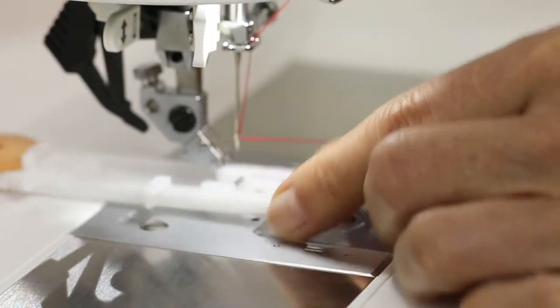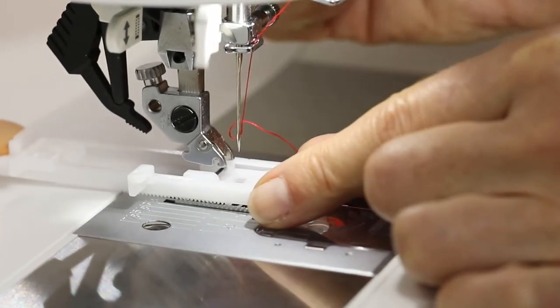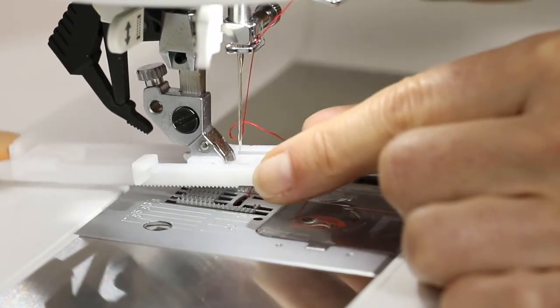Bring your buttonhole foot underneath the presser foot holder, then lower the presser foot holder until the foot snaps into place.